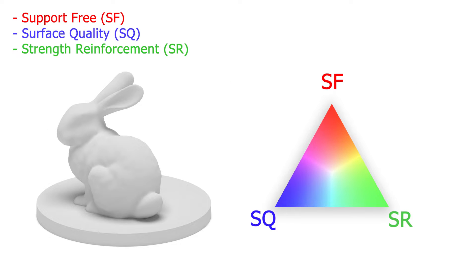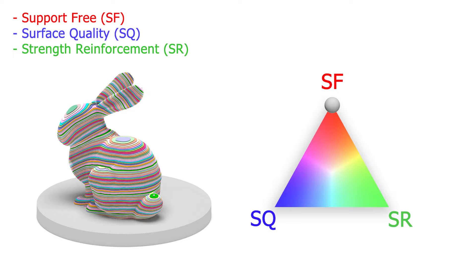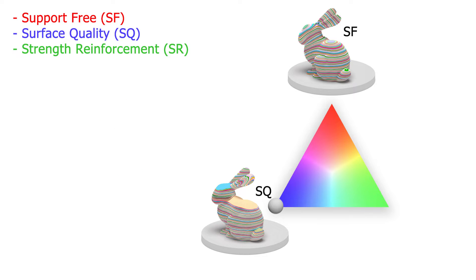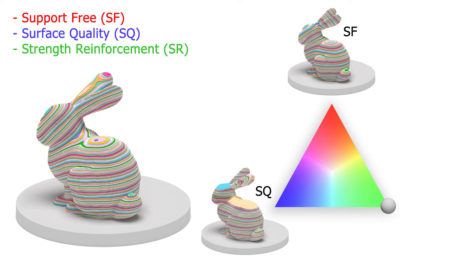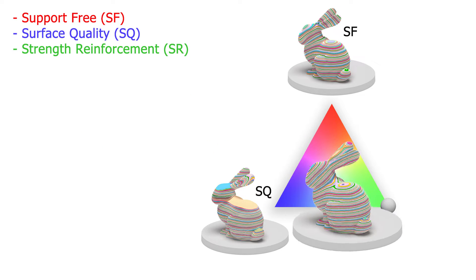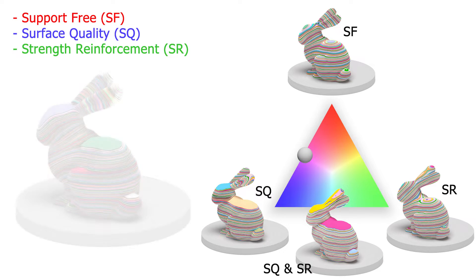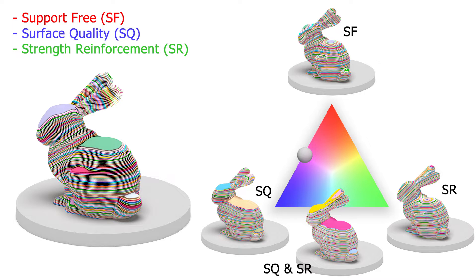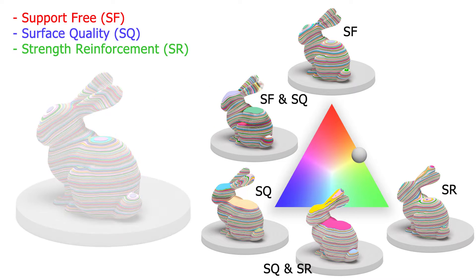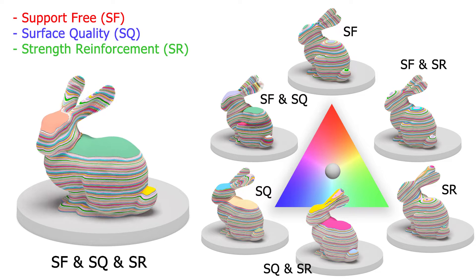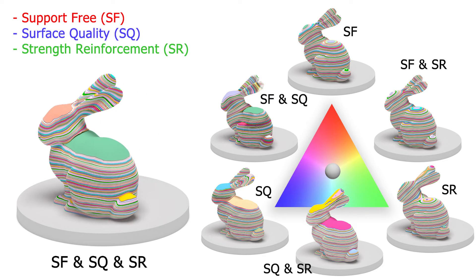We take the bunny model as an example. When only a single objective is considered, our method can slice the model into curved layers that enable support-free printing, preserve good surface quality, and enhance mechanical strength. Objectives can be optimized together to generate curved layers. We also show cases when two objectives are demanded, and our slicer can successfully handle the case where all three objectives are required together. The generated layers are shown on the left.